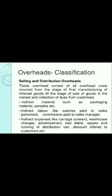Now we will read about the selling and distribution overheads. These overheads consist of all overhead costs incurred from the stage of final manufacturing of finished goods till the stage of sale of goods in the market and collection of dues from customers. This includes indirect material such as packaging material and samples; indirect labor like salaries paid to sales personnel and commission paid to the sales manager; and indirect expenses like carriage outward, warehouse charges, advertisement, bad debts, and repairs and running of distribution vans.